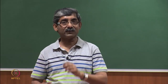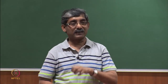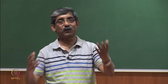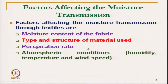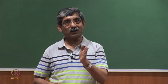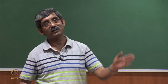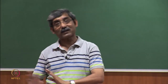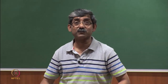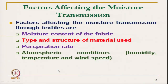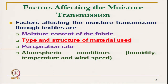Atmospheric condition — depending on humidity, wind speed, and temperature. At high humidity level, the fabric will not be able to release moisture at that rate because the air is already saturated and evaporation will not take place, so moisture transmission will be affected. Similarly, if there is wind blowing — that is forced convection — moisture transmission will be high. Temperature also affects. So the four factors are: moisture content of the fabric, type and structure of the material, perspiration rate of a person, and atmospheric condition.